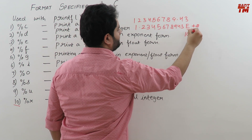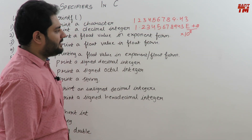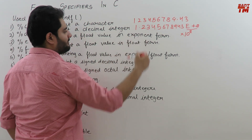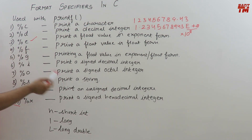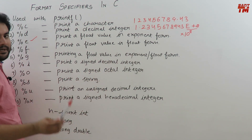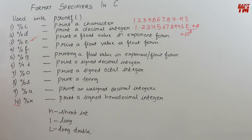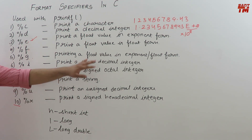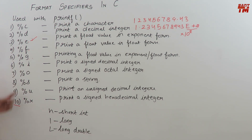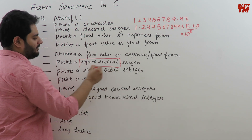e+8 means 10 raised to the power 8. If you want output in exponential form, use %e. %f displays in simple floating point form. %g chooses whether to display in exponent form or float form depending on how the number was initially assigned. So %e is specifically exponential, %f is specifically float, and %g decides based on input. Then %i prints a simple signed decimal integer.